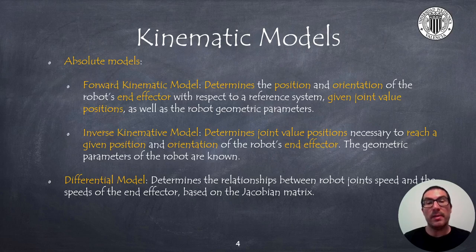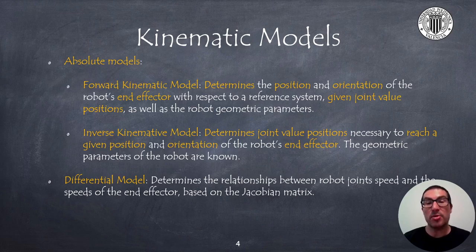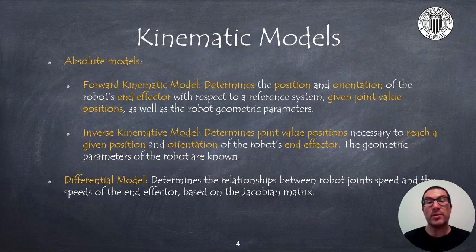A forward kinematic model allows to determine the position and orientation of the end effector from joint position values. An inverse kinematic model allows to obtain joint values that are necessary to reach a given position and orientation of the end effector. Differential models allow obtaining a locally linear expression in velocities. The Jacobian matrix is derived from the forward kinematic model. Each of the models can have different uses and therefore it is convenient to know all of them.